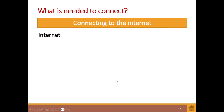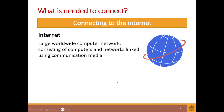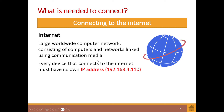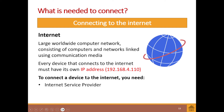The internet is a large worldwide computer network consisting of computers and networks linked using communication media. Every device that connects to the internet must have its own unique IP address, which identifies it within that particular network. To connect a device to the internet, you're going to need an internet service provider and an internet connection.